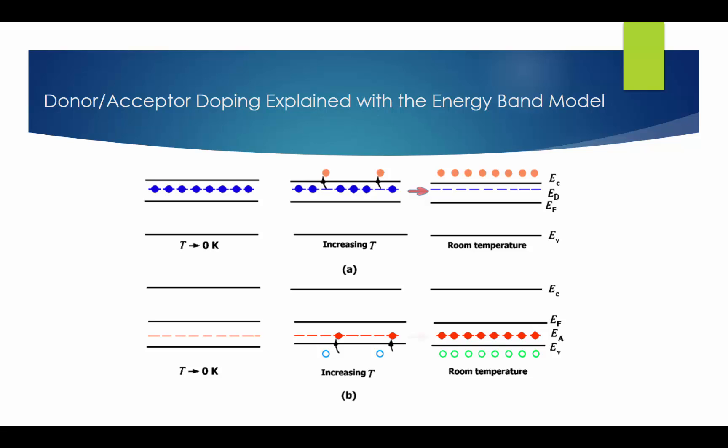In acceptor doping, all acceptor level energy states are filled with excited silicon valence electrons, thus many holes are generated at the valence band, which are also carriers. Thank you for viewing this video. If you find it useful, please don't forget to subscribe below.